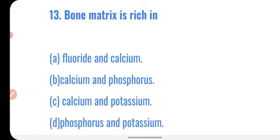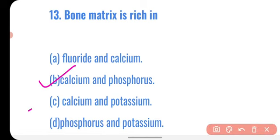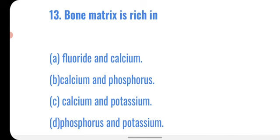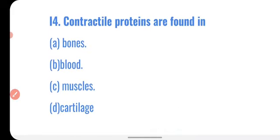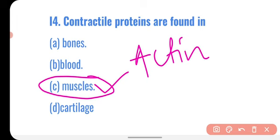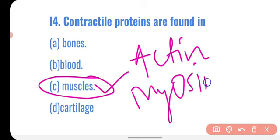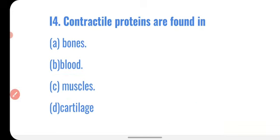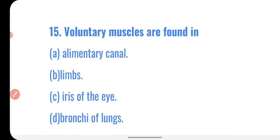Question thirteen: bone matrix is rich in — the matrix of bone is very hard due to the presence of calcium and phosphorus, which make it so hard. Correct option: calcium and phosphorus. Question fourteen: contractile proteins are found in — bones, blood, muscles, or cartilage? Muscles have the characteristic of contraction and relaxation. They contain contractile proteins actin and myosin, which cause contraction. Correct option: muscles.